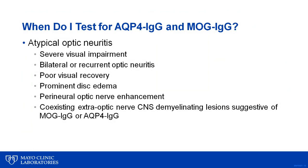One question we're often asked is: when should we test for aquaporin-4 and MOG antibodies? We believe that these antibodies should be checked for any case of atypical optic neuritis, which includes severe visual impairment, bilateral or recurrent optic neuritis, poor visual recovery, prominent disc edema, perineural optic nerve enhancement, or coexisting extra-optic nerve CNS demyelinating lesions suggestive of MOG or aquaporin-4 disease. It is important to differentiate MOG and aquaporin-4 disease from MS because the outcomes and treatment are different.